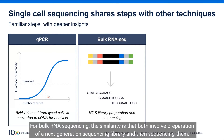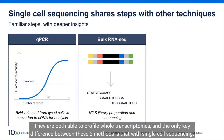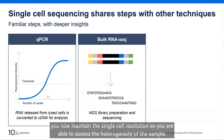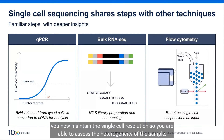For bulk RNA sequencing, the similarity is that both involve preparation of a next-generation sequencing library and then sequencing. They are both able to profile whole transcriptomes. The key difference is that with single-cell sequencing, you maintain single-cell resolution, so you are able to assess the heterogeneity of the sample.